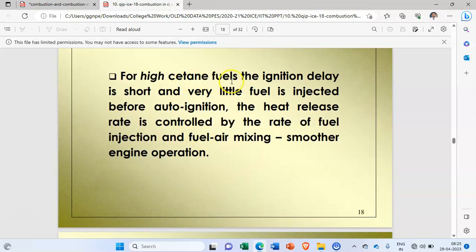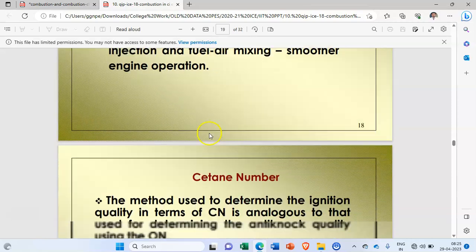For high cetane fuels, the ignition delay is very short and very little fuel is injected before auto ignition. The heat release rate is controlled by the rate of fuel injection and fuel-air mixing, resulting in smoother engine operations. When the cetane number is high, there is no detonation or knocking in the CI engine because the ignition delay period is very short.